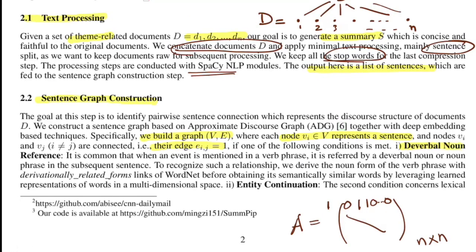The first condition is deverbal noun reference. It is common that when an event is mentioned in a verb phrase, it is referred to by a deverbal noun or noun phrase in the subsequent sentence. For example, if a sentence has the verb phrase 'playing cricket,' the following sentence may have the noun form 'cricket.' If such a relation holds, an edge is added with edge weight one. This rule essentially maps both sentences to the same parent theme, and WordNet is used for this purpose.